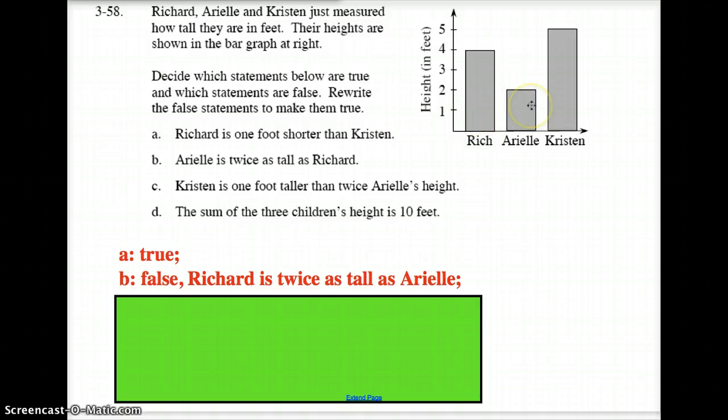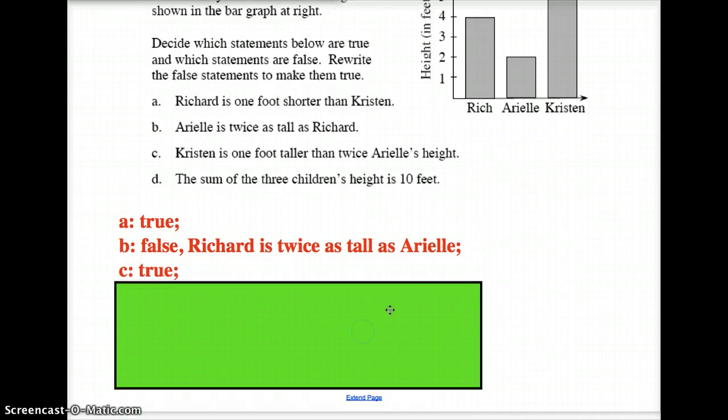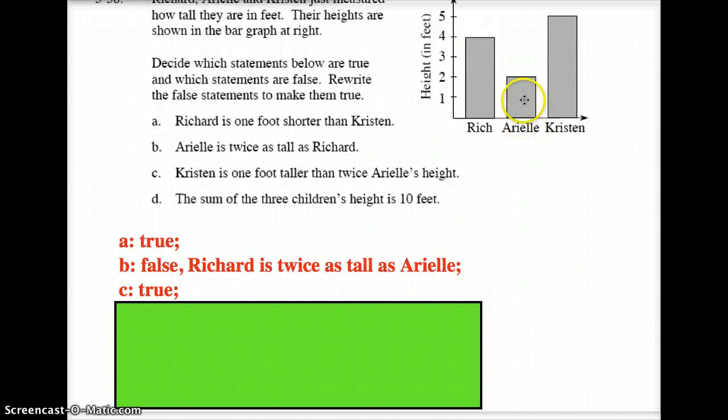Letter C: Kristen is one foot taller than twice Ariel's height. If you believe that Kristen is one foot taller than twice Ariel's height, mark true. If you do not believe that Kristen is one foot taller than twice that height, mark false. You should have that answer by now, and that answer of course is true, because Ariel's two feet, so twice that would be four feet, and Kristen would still be one foot taller than that.